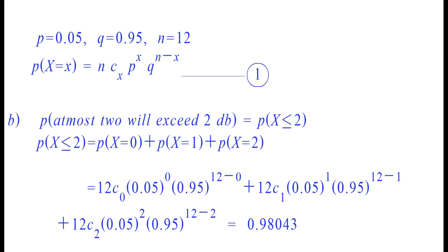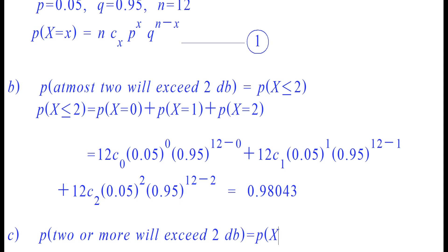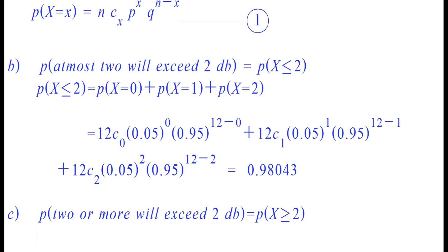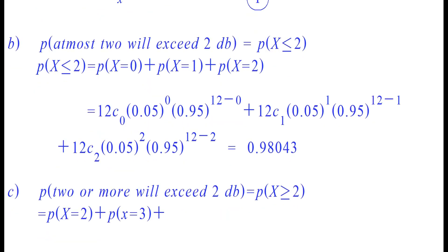The third part of the question is to find the probability that out of 12 amplifiers, 2 or more will exceed 2 decibels. That is, probability of x greater than or equal to 2, which is equal to probability of x=2 plus probability of x=3 plus probability of x=4, up to probability of x=12. But this is a tedious approach.